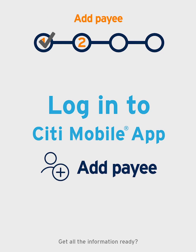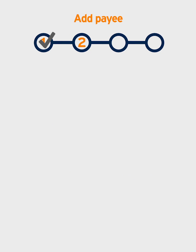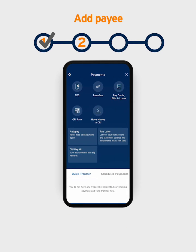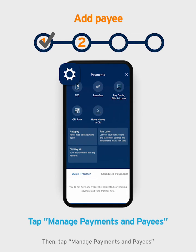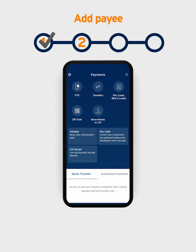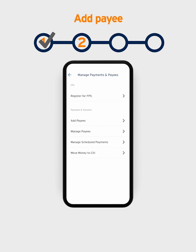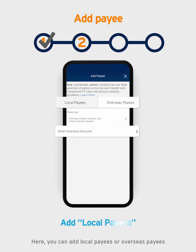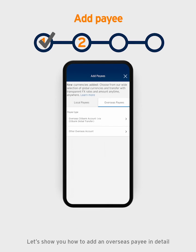Get all the information ready? You can add a payee right away. Let's go! Log in to Citi Mobile App. Tap Payments, then tap Manage Payments and Payees, and then Add Payees. Here you can add local payees or overseas payees. Let's show you how to add an overseas payee in detail.